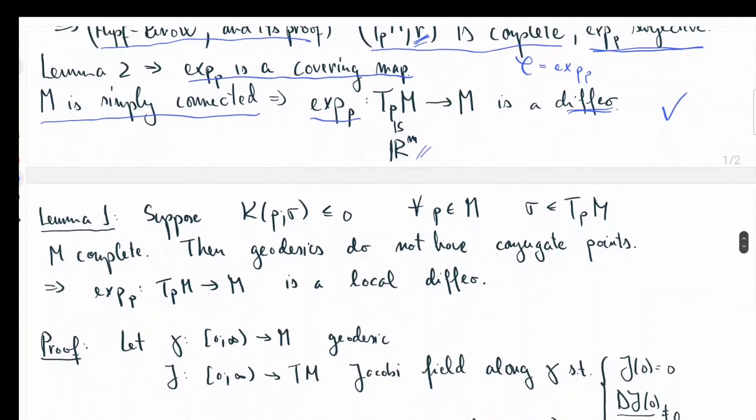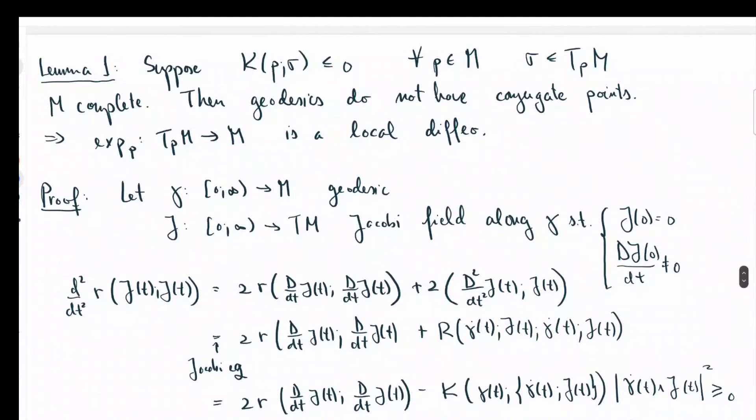Let's recall the statement again. Suppose we have a complete manifold with non-positive sectional curvature, then geodesics do not have conjugate points. As I already argued before, this implies that exp is going to be a local diffeo for all points p, and in addition, it will have to be surjective.